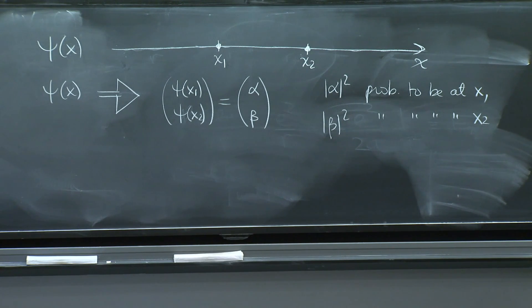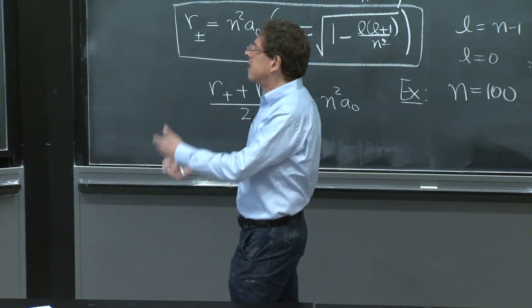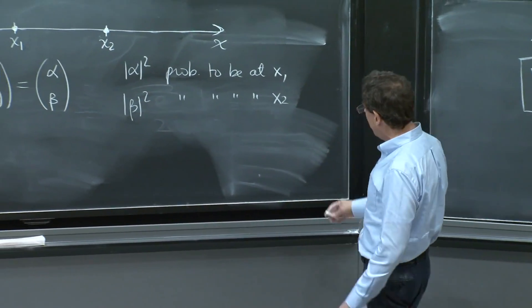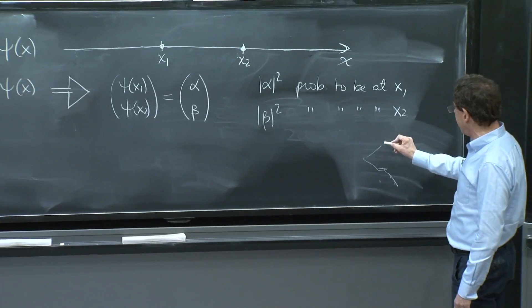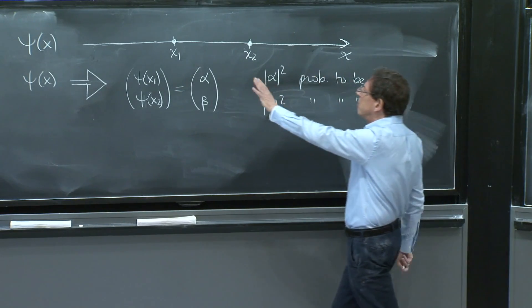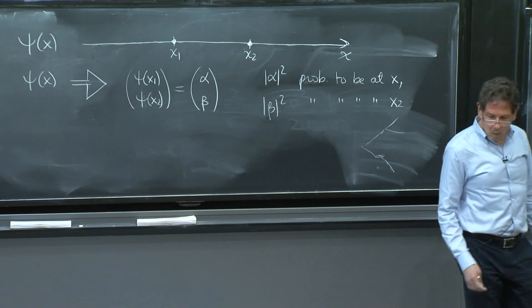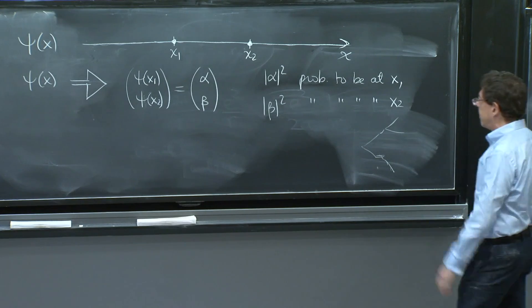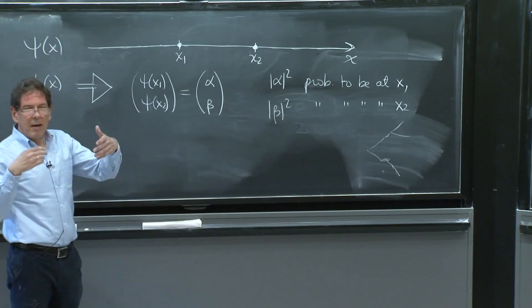And this may remind you already of something we're doing with interferometers, in which the photon could be in the upper branch or the lower branch, and you had two numbers. So this is somewhat analogous, except that with the interferometer, you could eventually put more beam splitters and have maybe later three branches or four branches. But here I want to consider two things.